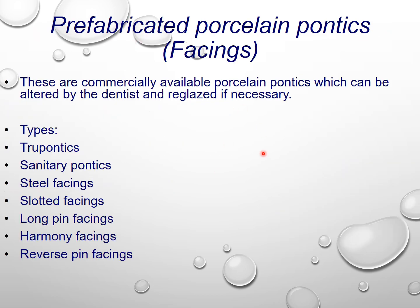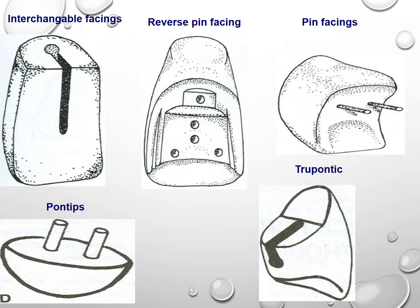Coming to prefabricated porcelain pontics — these are basically facings. These are commercially available porcelain pontics which can be altered by the dentist and re-glazed if necessary. They are pre-formed pontics which can be glazed and put together in a bridge. Types include: true pontic, sanitary pontic, steel facing, slotted facing, long pin, harmony, reverse pin, and interchangeable.